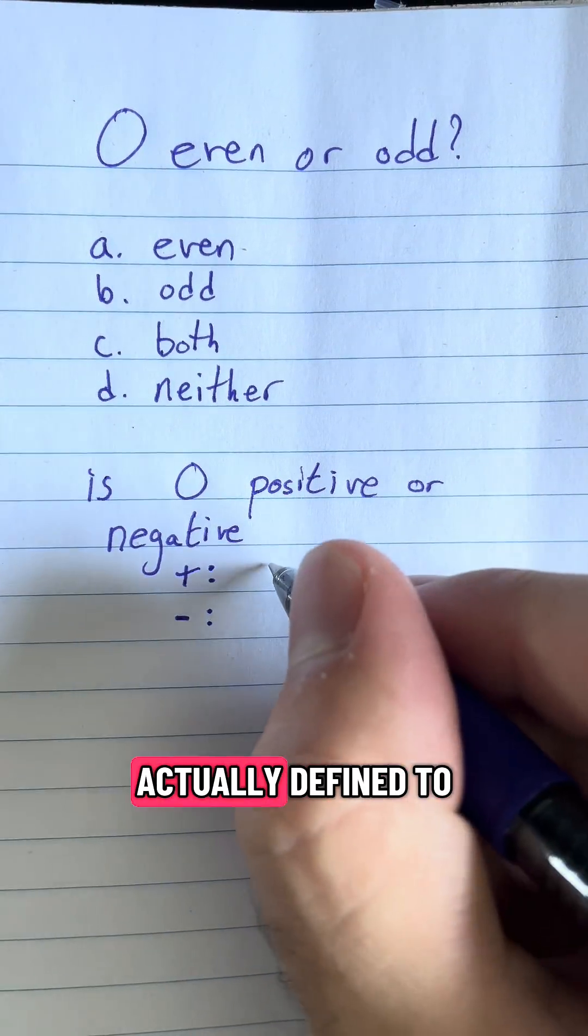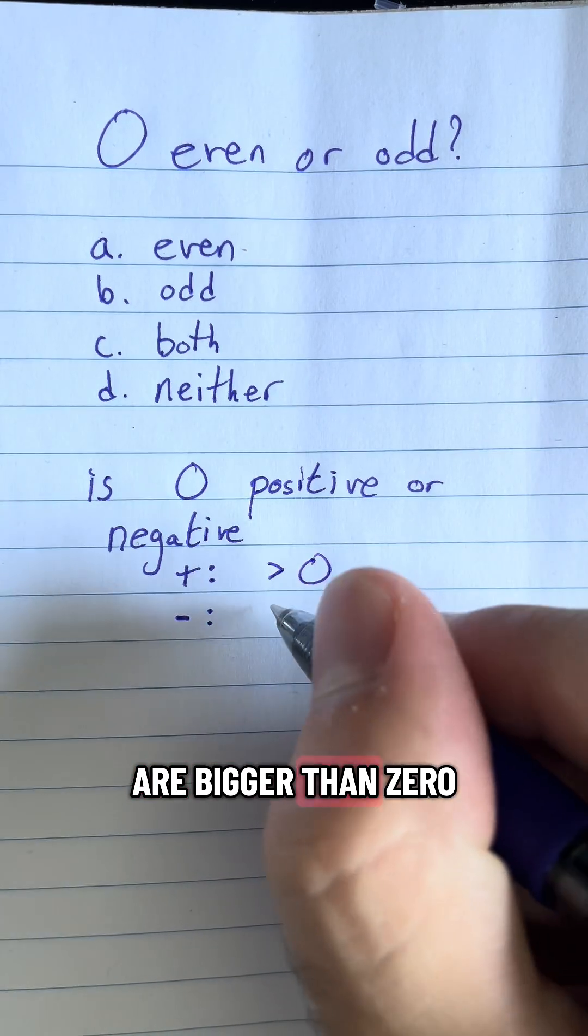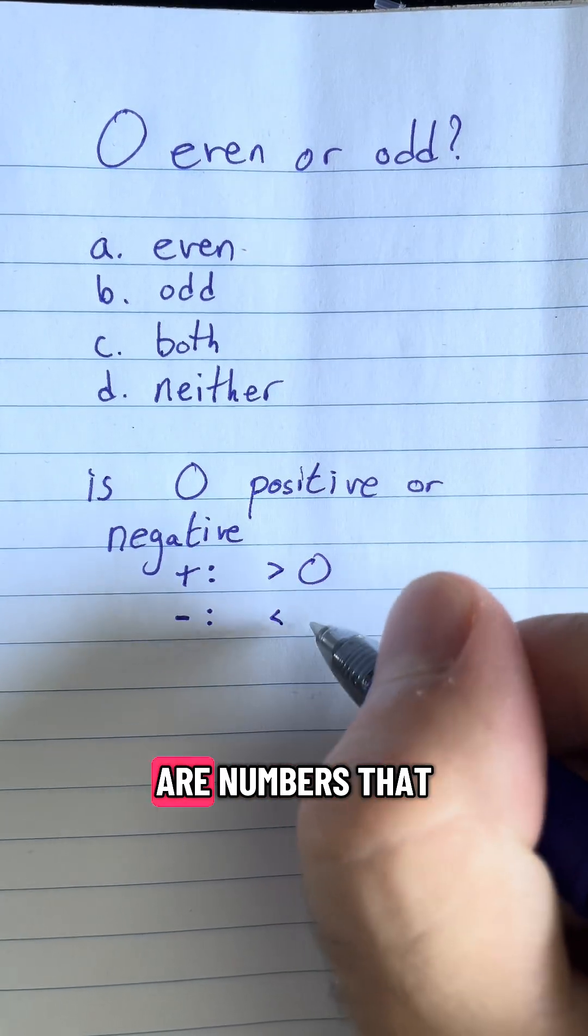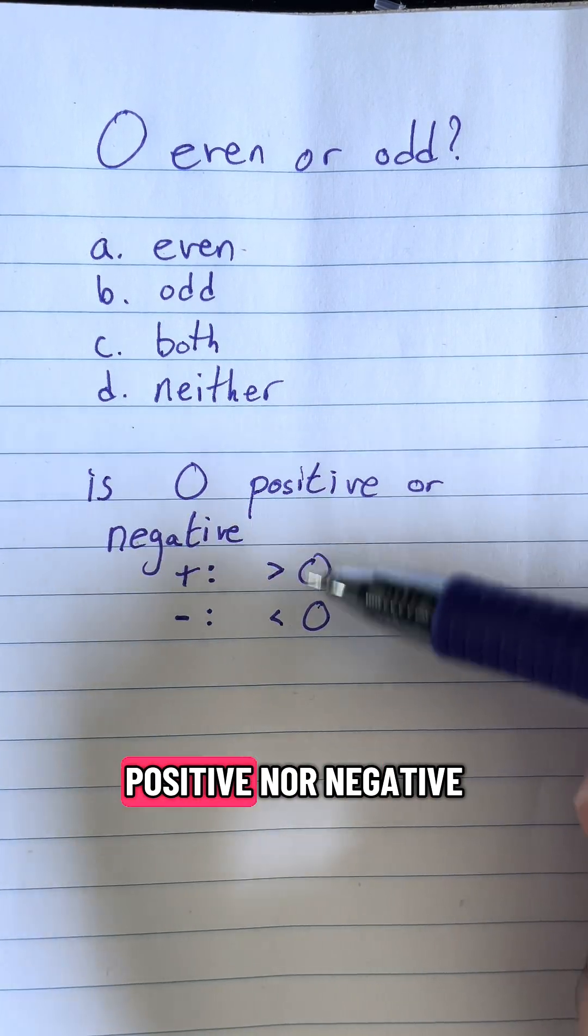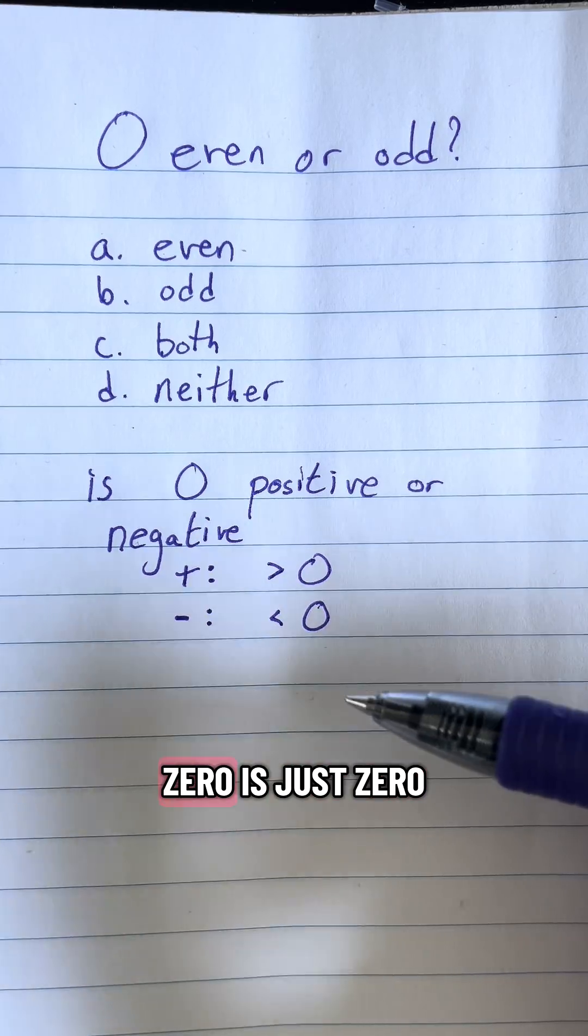Positive numbers are actually defined to be numbers that are bigger than zero and negative numbers are numbers that are defined to be less than zero, which means that zero is neither positive nor negative. Zero is nothing. Zero is just zero.